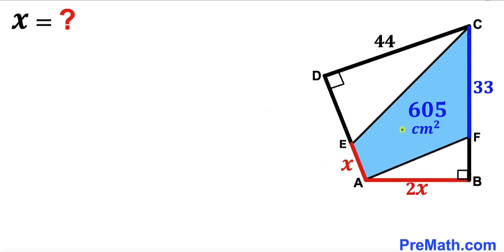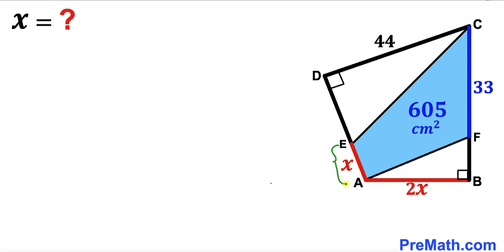Welcome to PreMath. In this video we have got this blue shaded quadrilateral EFCE fully confined in a bigger quadrilateral ABCD, such that the area of this blue shaded region is 605 centimeters squared. Its side length EA is represented by X and its other side length CF is 33 centimeters.